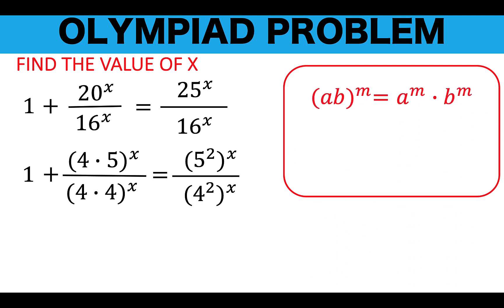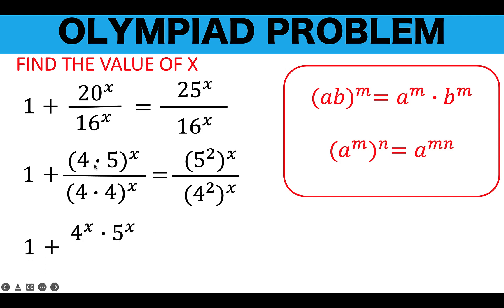Then let's recall some properties of exponents. Notice that the quantity 4 times 5 raised to x applies the power-of-a-product property: a times b raised to an exponent equals the first factor raised to that exponent times the second factor raised to the same exponent. We copy the 1 and rewrite the quantity 4 times 5 all raised to x as 4 raised to x times 5 raised to x, applying this property, and apply the same property to simplify the denominator.